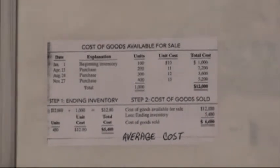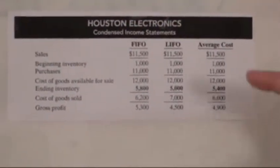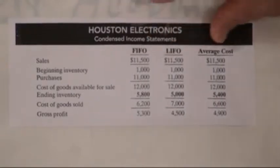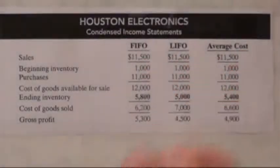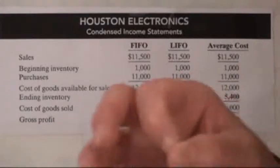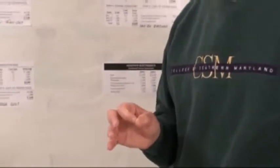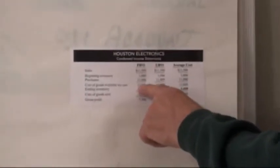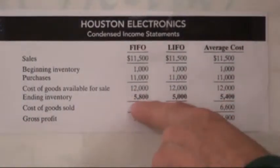Now let's look at this next illustration — Houston Electronics with a condensed income statement. We've now completed all three calculations: FIFO, LIFO, and average cost. Sales are still $11,500, representing real cash inflow. Depending on which method the company uses, that determines their ending inventory, cost of goods sold, and ultimately net income. Beginning inventory plus purchases gives total goods available for sale of $12,000 under all three methods.